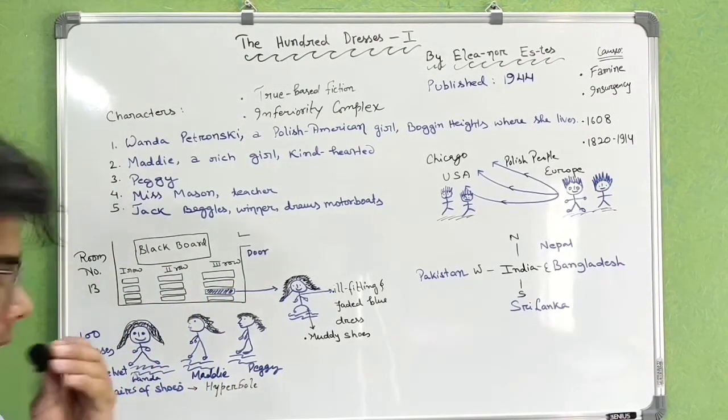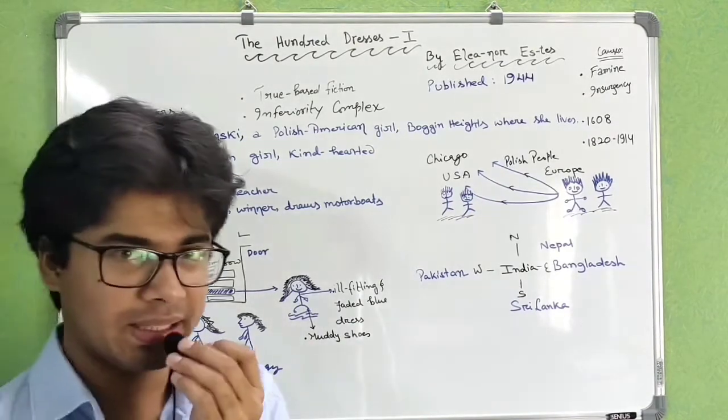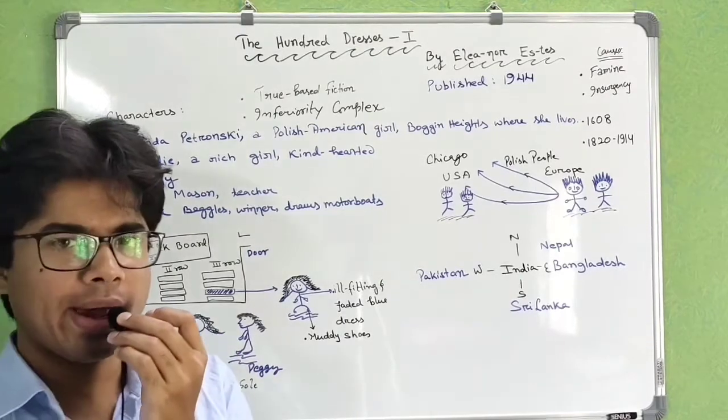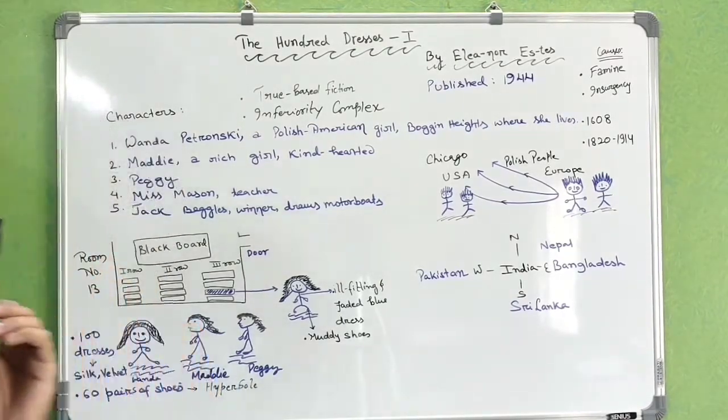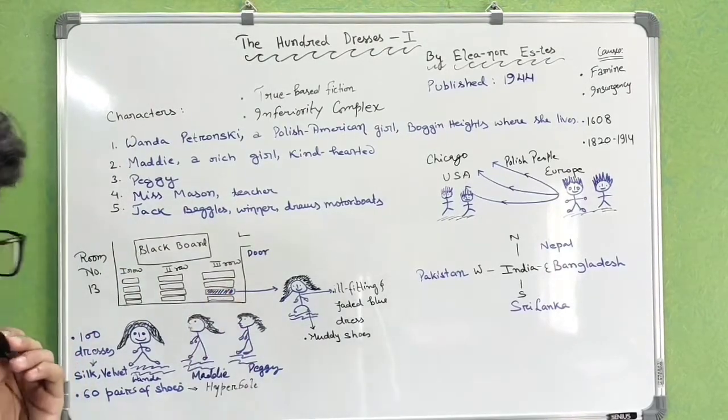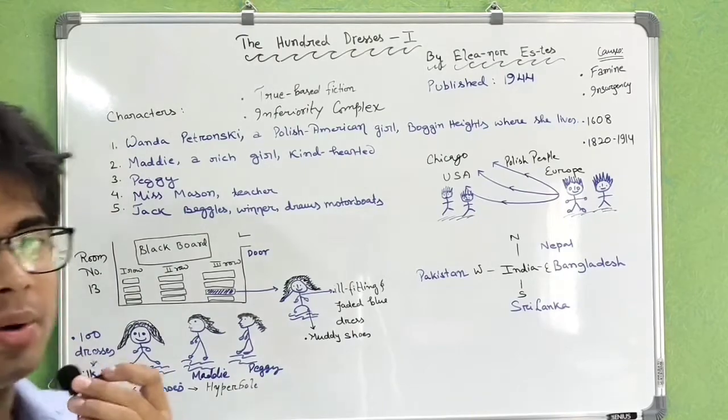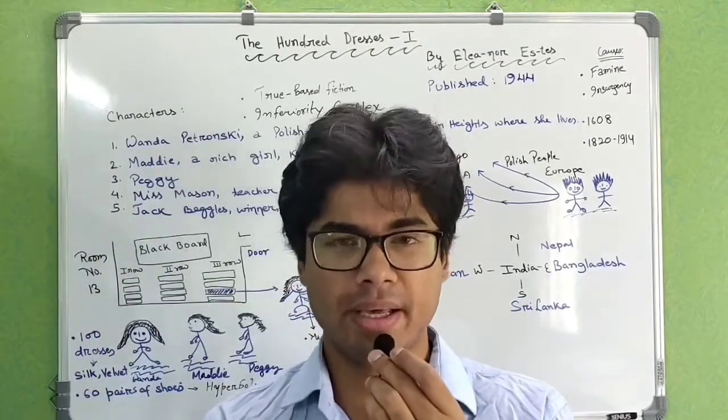As a matter of fact, when Wanda acquired first position, she was not present in the class. She had been absent for a long time, perhaps because she might have moved to some other city where most people like her reside. Maddy and Peggy started admiring Wanda's drawing. This is how the story ends. I guess we have learned a lesson after reading it.